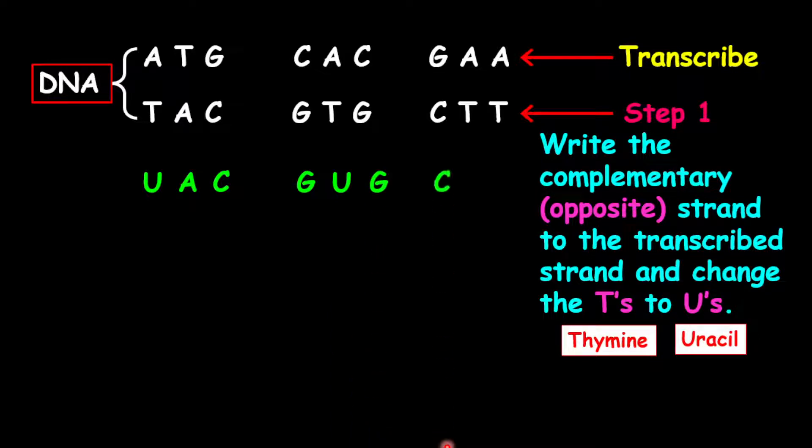Now our second codon which is CAC, we're going to read that into a codon chart. Looking for CAC, started from a central point. So our first base is C then A then C and this is histidine which is H-I-S. And so this is our second amino acid.